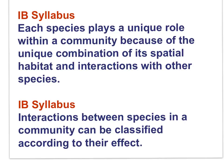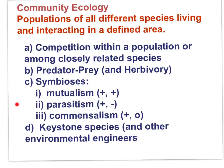Here are the first two IB syllabus statements to start the movie, both of which were introduced in Part 1. Each species plays a unique role within a community because of the unique combinations of its spatial habitat and interactions with other species. Interactions between species in a community can be classified according to their effect. Part 1 looked at competition, and Part 2 is looking at predator-prey, including herbivory, as well as symbioses and keystone species.